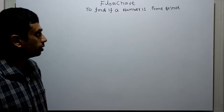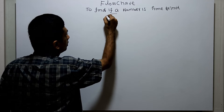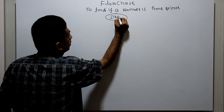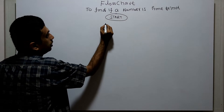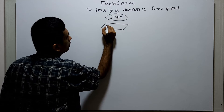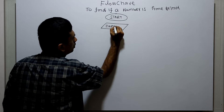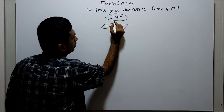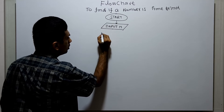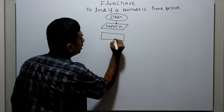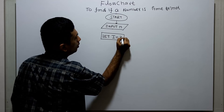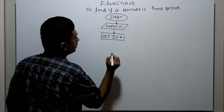This is the logical start of the flowchart. I'm going to obtain a number from the user as input, stored in the variable n. Next I am using the variable i, setting i equal to two. Set is a keyword which assigns a value to a variable.